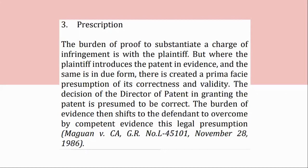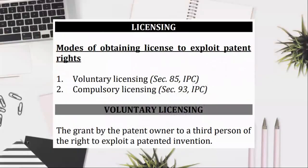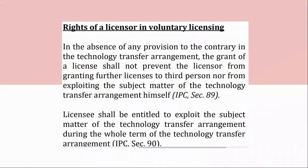Licensing — Modes of Obtaining License to Exploit Patent Rights: (1) Voluntary Licensing, Section 85, IPC; (2) Compulsory Licensing, Section 93, IPC. Voluntary Licensing: the grant by the patent owner to a third person of the right to exploit a patented invention. Rights of a licensor in Voluntary Licensing: in the absence of any provision to the contrary in a technology transfer arrangement, the grant of a license shall not prevent a licensor from granting further licenses to third persons nor from exploiting the subject matter of the technology transfer arrangement himself, IPC, Section 89. Licensees shall be entitled to exploit the subject matter of the technology transfer arrangement during the whole term of the technology transfer arrangement, IPC, Section 90.